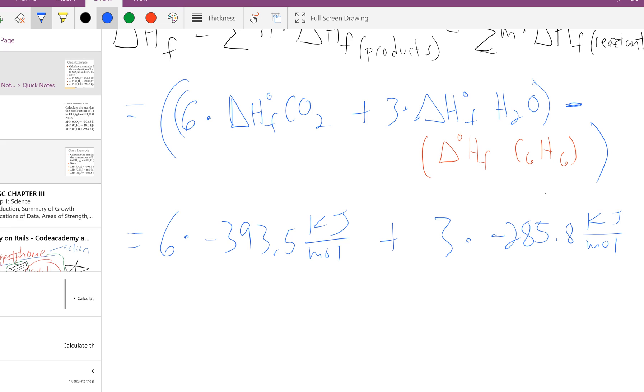Let me do the calculations quickly. For this first value, I get negative 2,361 kilojoules per mole plus negative 857.4 kilojoules per mole.